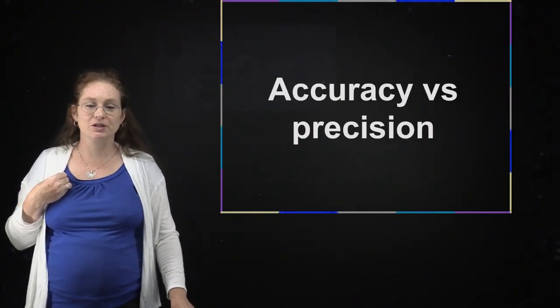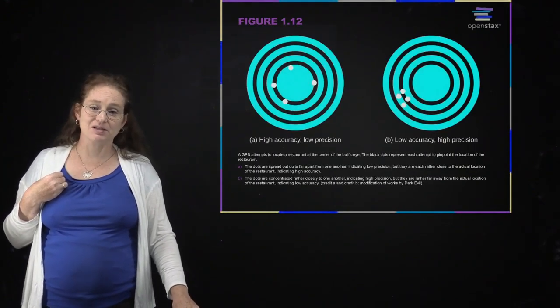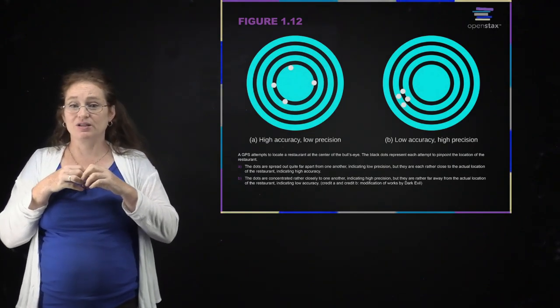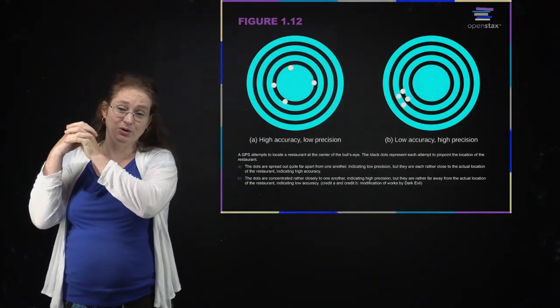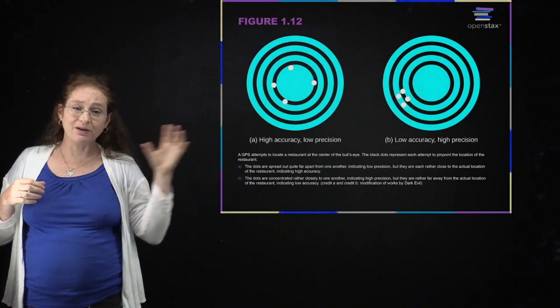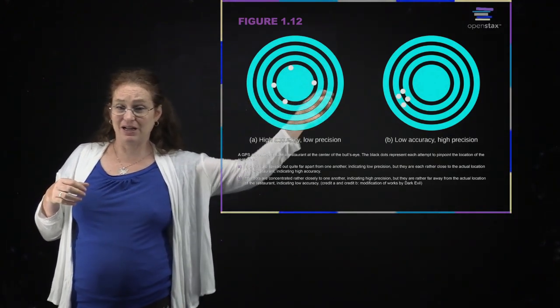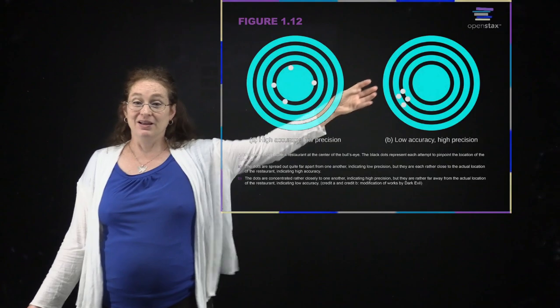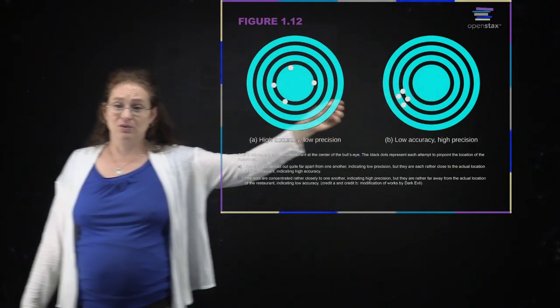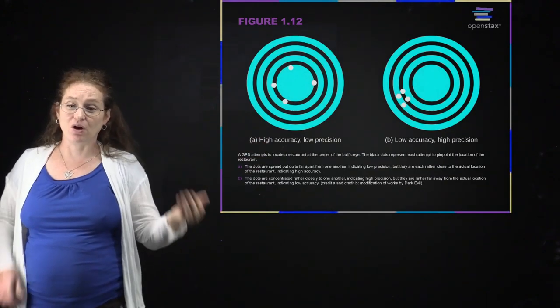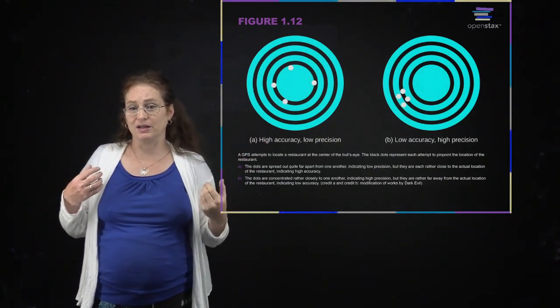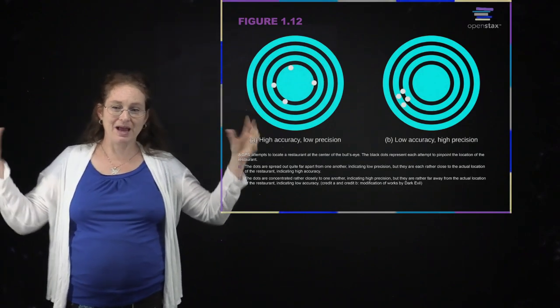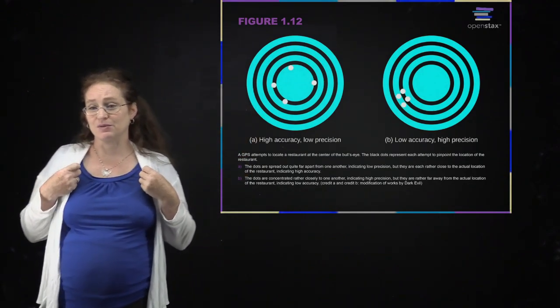Accuracy versus precision. Accuracy means that you get the right answer. Precision means that all of your different approaches give you the same answer. We often don't know if we have an inaccurate answer. This is low accuracy, not actually on target, but you're getting the same answer over and over again. This is really hard to tease out. We at least know if we have high precision. If all the time when we're measuring something, we're measuring almost the same thing, we are often after both. We want both accuracy and precision, but sometimes there are trade-offs.